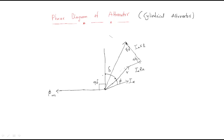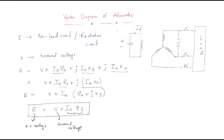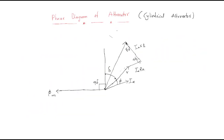This voltage is called the Er voltage. Adding the armature reaction major drop ia·Xa gives us the final open circuit voltage E — the complete voltage E. The load angle is the angle between the E and terminal voltage vectors.